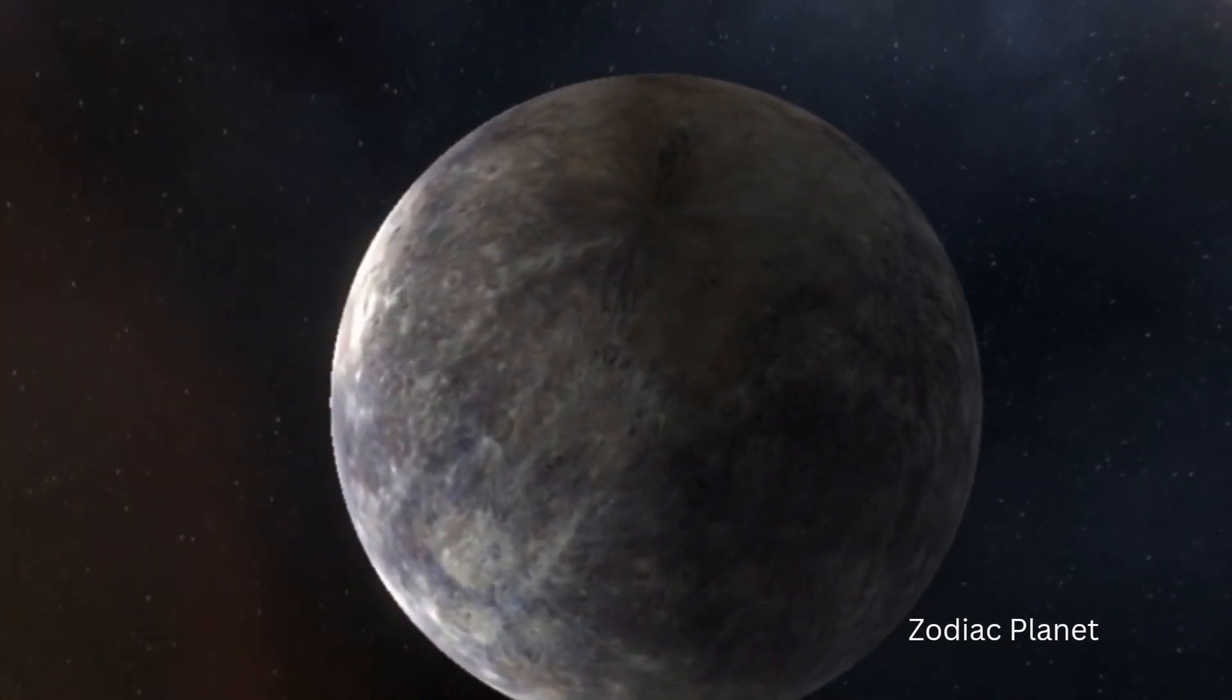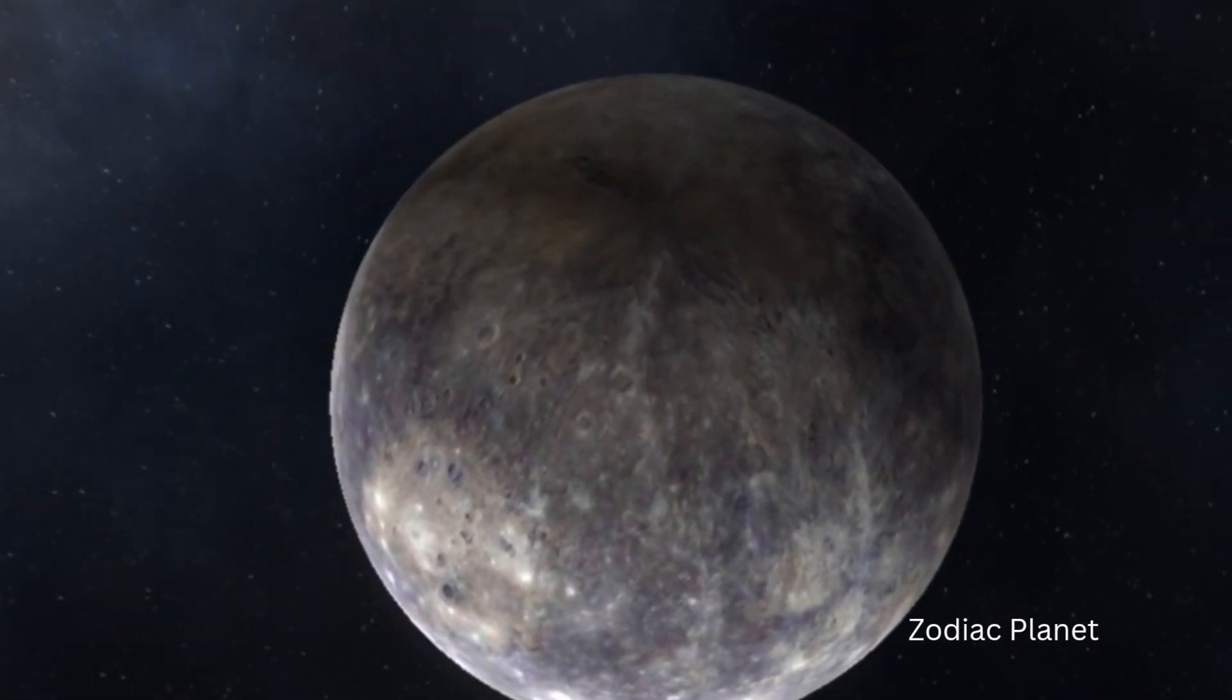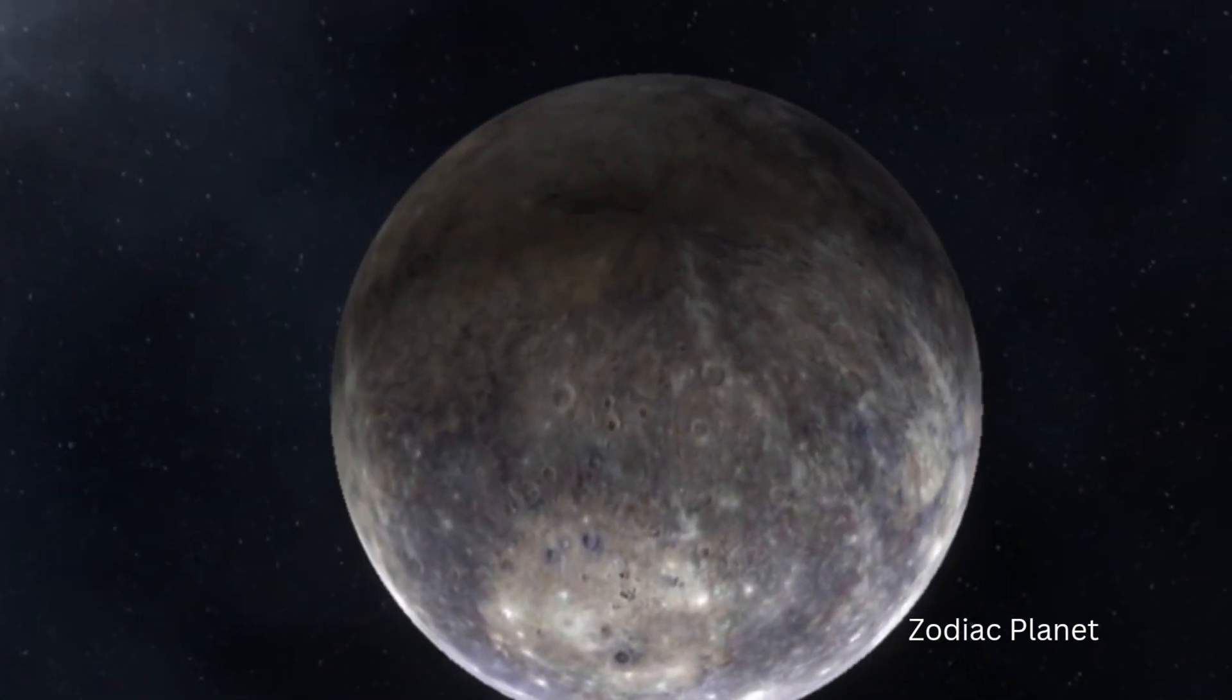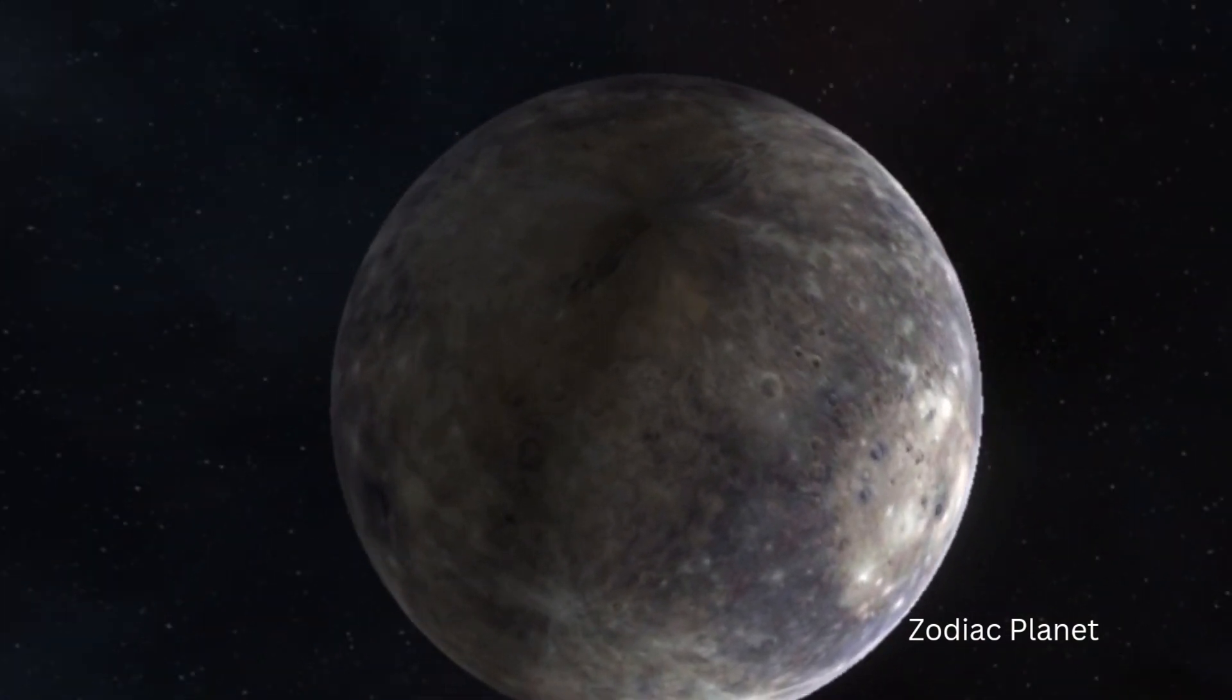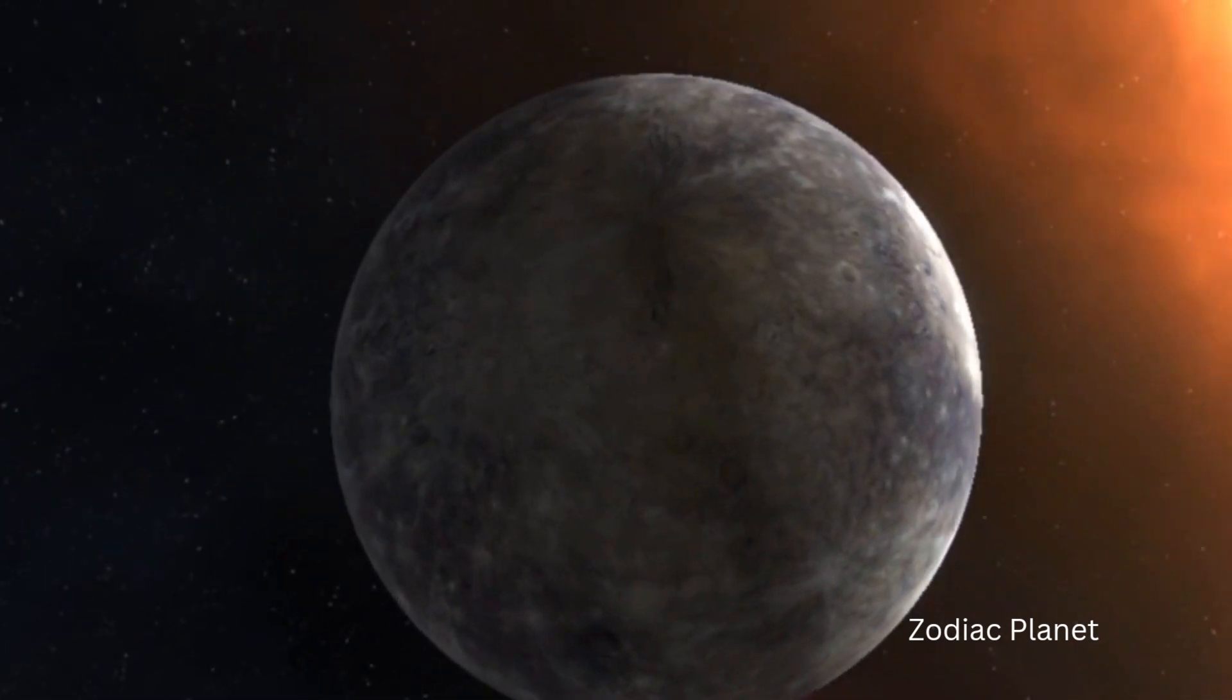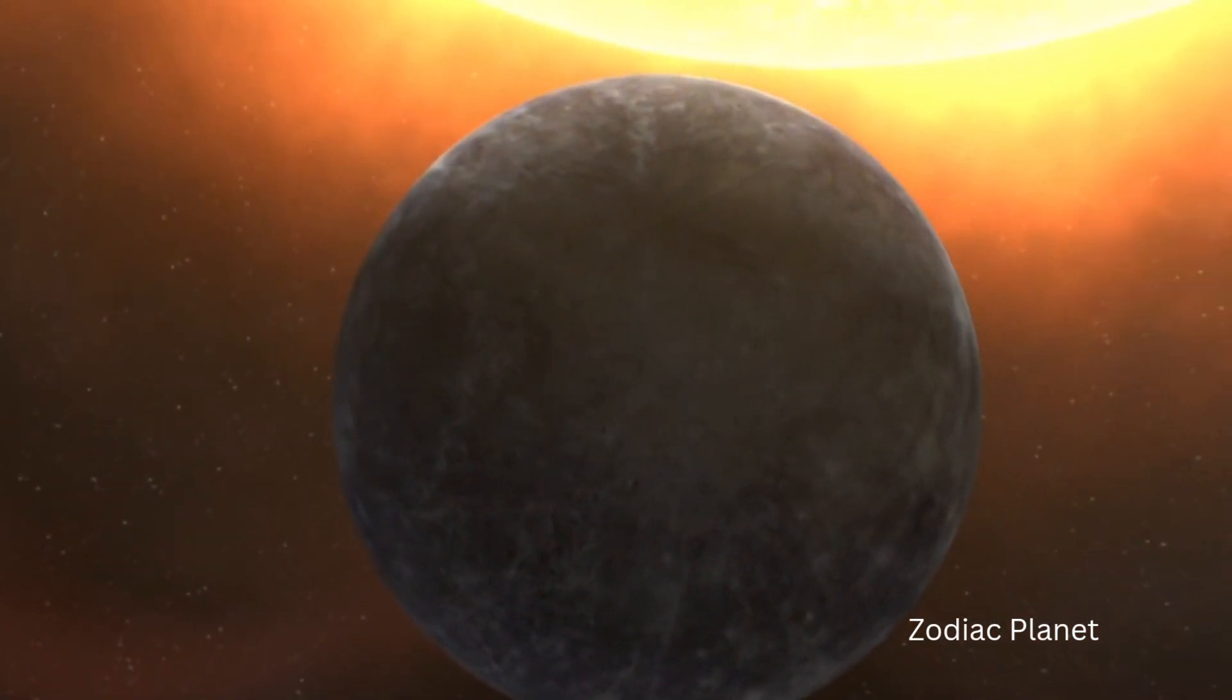By studying its surface and atmosphere, scientists are able to uncover its secrets and gain insights into the history of the solar system. Even though it is small, Mercury is a very important planet because it helps us to better understand the formation of the solar system.